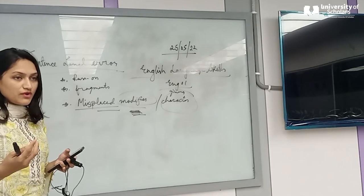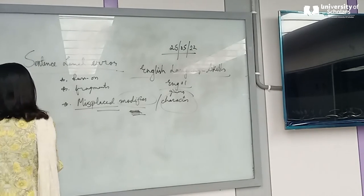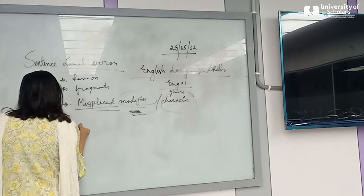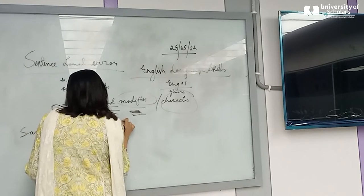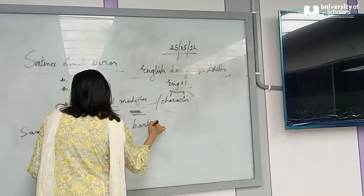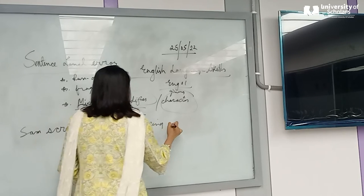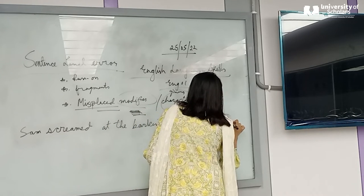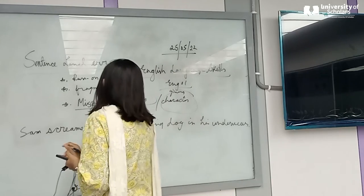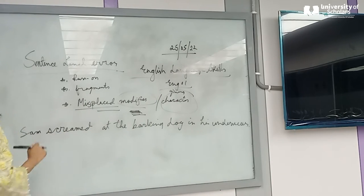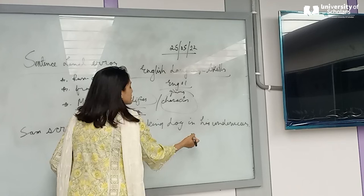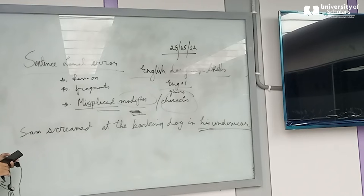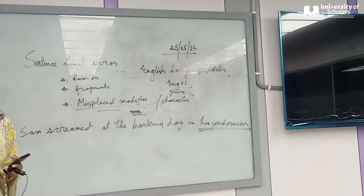Let's see some examples. 'Sam screamed at the barking dog in his underwear.' Here, 'in his underwear' is the modifier. What does the sentence mean? What meaning does it convey?